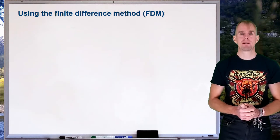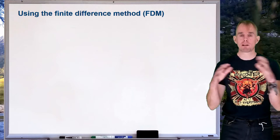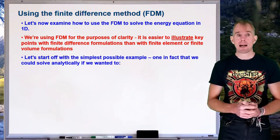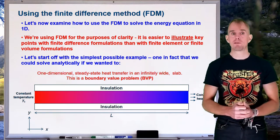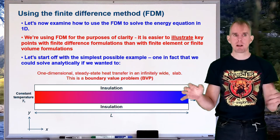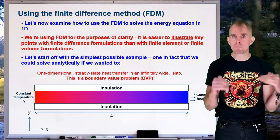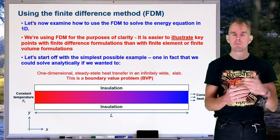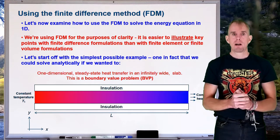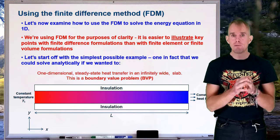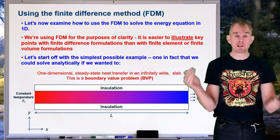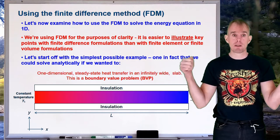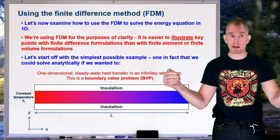Now let's look at how we start this seven-step process — how we get our transport equation and solve it numerically using the finite difference method. We're going to go back to our heat transfer problem from the previous part of this lecture: one-dimensional heat transfer from a hot end to a cold end. We have no temperature gradients in the y-direction because of solid insulation, only a temperature gradient in the x-direction. This is a boundary value problem because the temperature profile depends entirely on T1 at one end and the heat flux being removed at the other end.